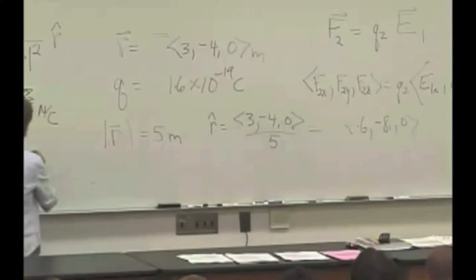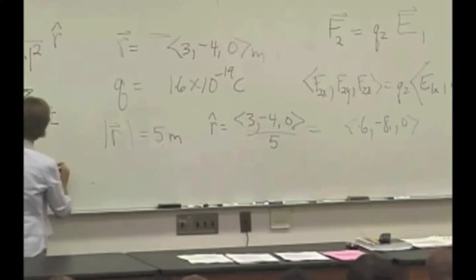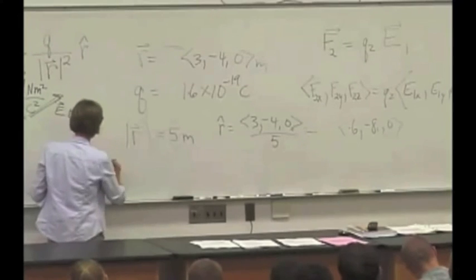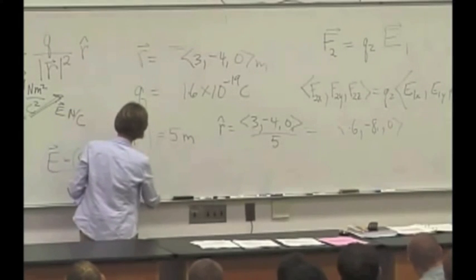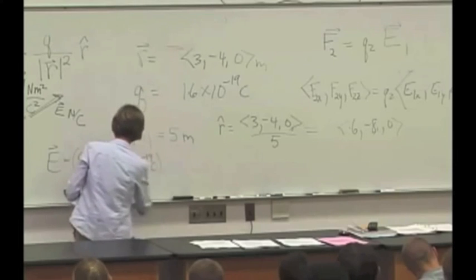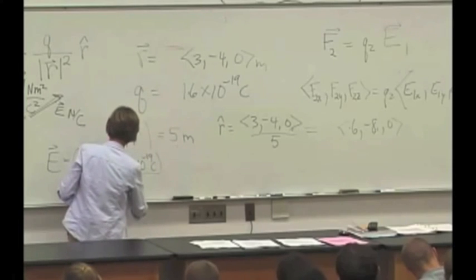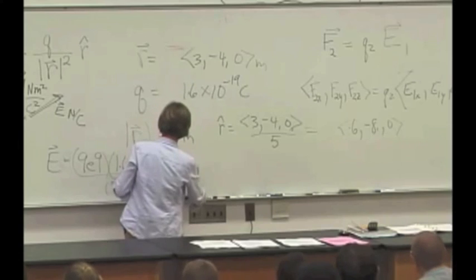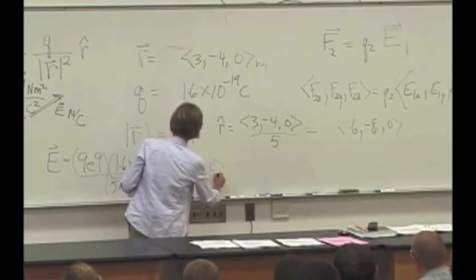And so to get this whole thing, we take E is 9 times 10 to the 9th newton meters squared per Coulombs squared, 1.6 times 10 to the minus 19 Coulombs. We divide by 5 meters, the quantity squared. We multiply by 0.6, negative 0.8, 0.